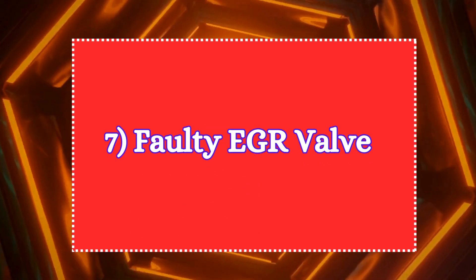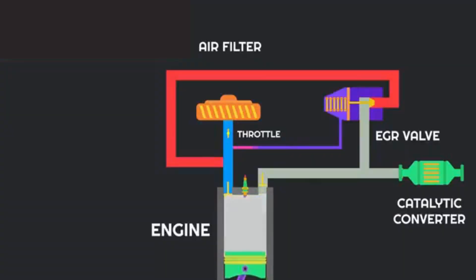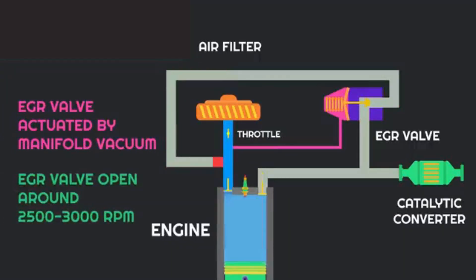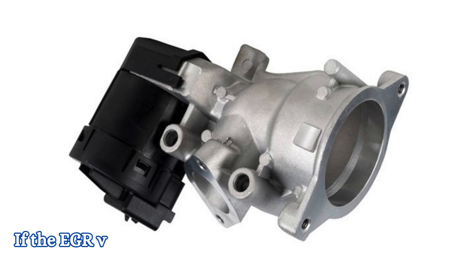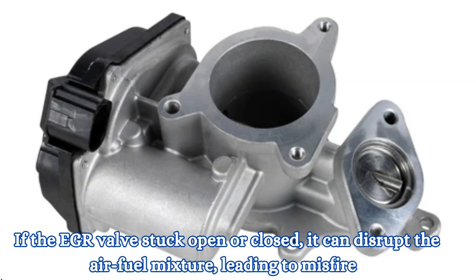Seventh, faulty EGR valve. The EGR valve recirculates a portion of the exhaust gases back into the combustion chamber. If the EGR valve sticks open or closed, it can disrupt the air-fuel mixture, leading to misfires.